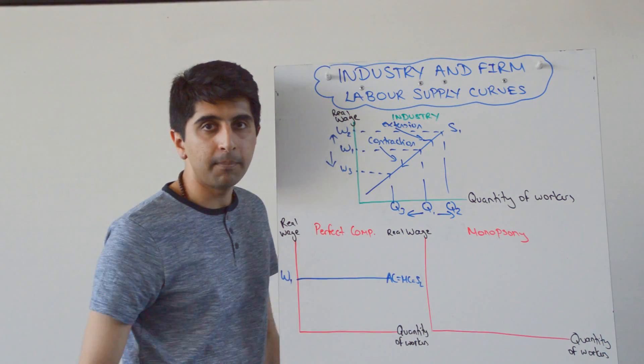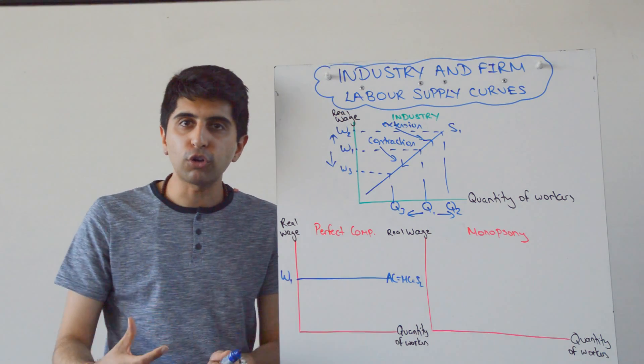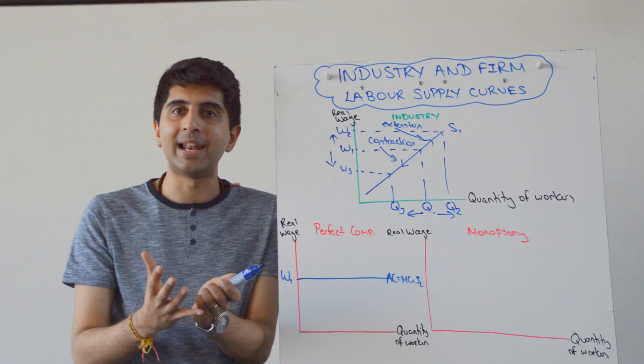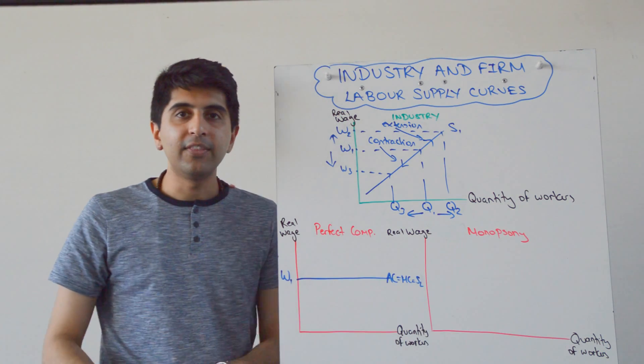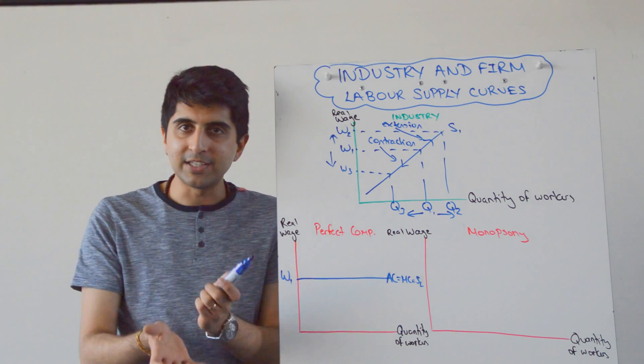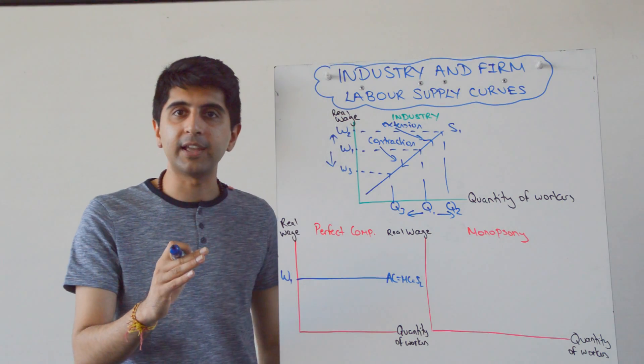However, if a firm is a monopsony, so if a firm has got control over the number of workers they can hire, it is the sole employer, let's say, or a dominant employer of workers in a given industry, then their supply curve is going to look very different. They have control over the wages that they can actually issue to their workers, but they are constrained by their supply curve.